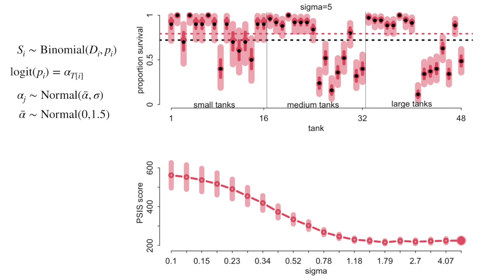In the previous lecture I introduced varying effects through the tadpole survival example. I showed you that if we take a model in which we estimate survival across a range of different units in the data, we always have this choice of what the prior should be for those parameters that estimate the features of each unit — in particular, how wide the prior should be. In this example, that's the sigma parameter, which determines the standard deviation of the normal distribution assigned to the log odds of survival for each tank.